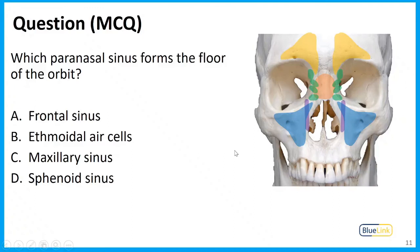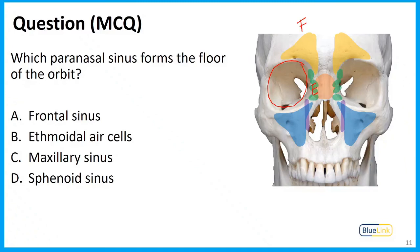Let's assess ourselves: which paranasal sinus forms the floor of the orbit? Is it A) the frontal sinus, B) the ethmoidal air cells, C) the maxillary sinus, or D) the sphenoid sinus? Go ahead and pause to choose your answer. Looking at the orbit, we find the frontal sinus superior to it, the ethmoid sinuses medial to it, and the maxillary sinus inferior to it. So the maxillary sinus forms the floor of the orbit — the correct answer is C. The ethmoidal air cells form the medial wall of the orbit.